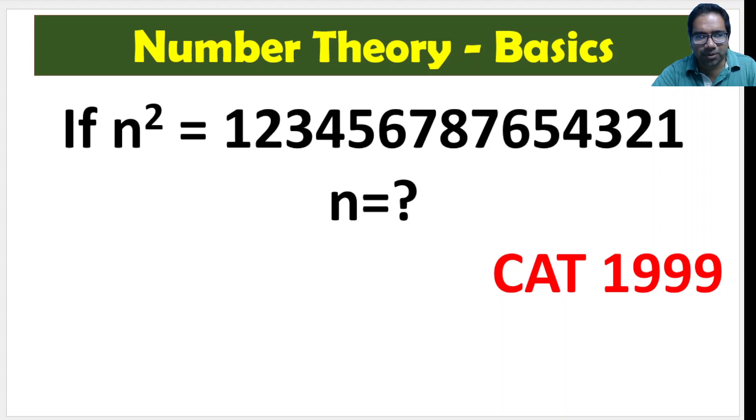Hi friends, here is a very easy problem. n squared equals 1234567876543221. What is n? See the number is very similar, right? It's kind of palindrome.